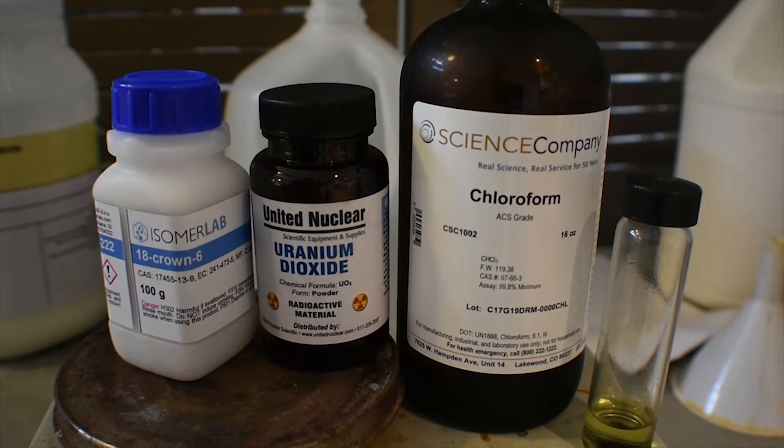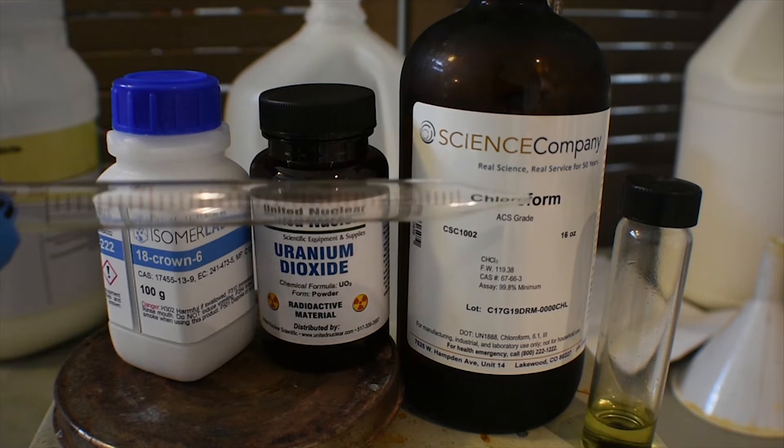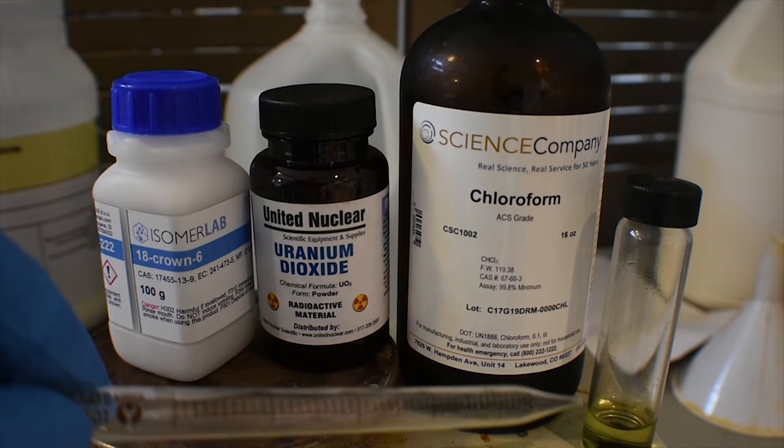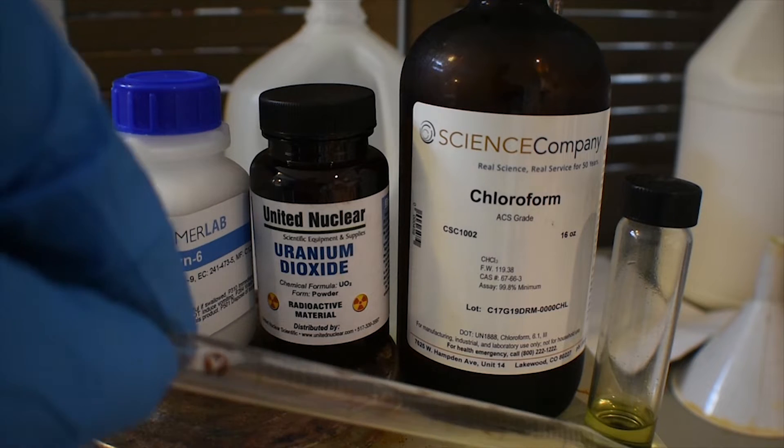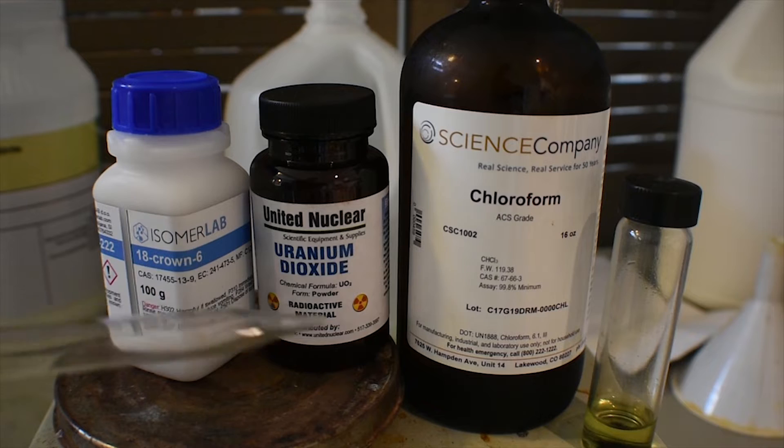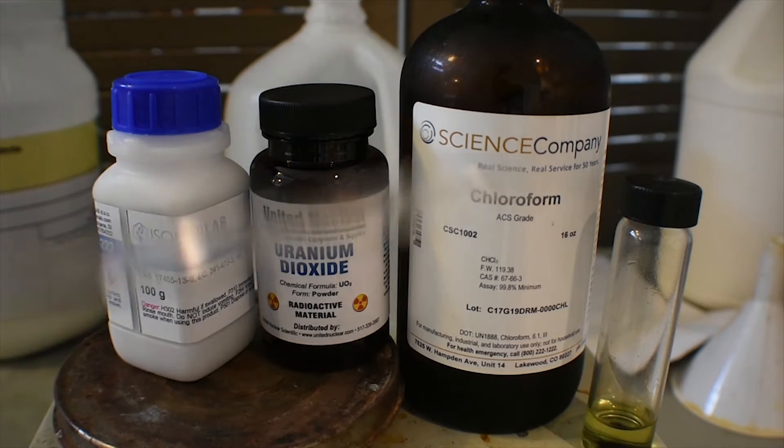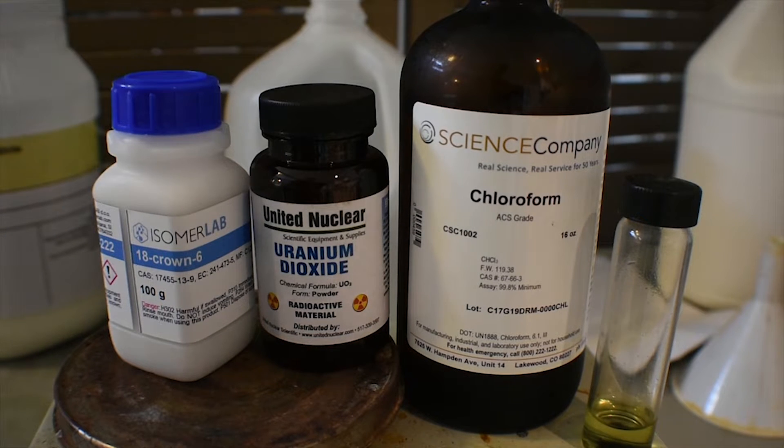My plan for this is to dissolve the 18-crown-6 in chloroform. Now, why I chose chloroform is because urinal nitrate is not soluble in chloroform. It is soluble in water, and that's what it's dissolved in right now. So with the 18-crown-6 dissolved in the chloroform, the 18-crown-6 will also complex with the urinal nitrate and dissolve in the chloroform, giving a green color, indicating that complexation has indeed occurred.